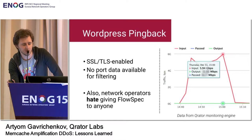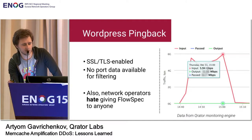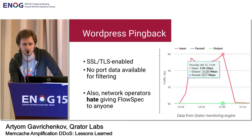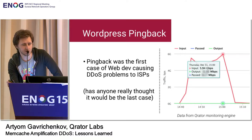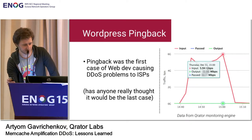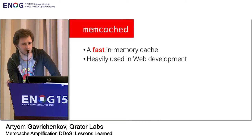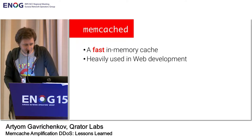If an attack is against an HTTPS encrypted resource, all the traffic is encrypted and we can't use fixed port information. Flow spec is also expensive and takes a lot of resources, and operators don't usually like to allow arbitrary flow spec rules. WordPress pingback was the first case of web software that created serious problems with availability and accessibility. The hero of February and March this year is another actively used web piece of software called Memcached.